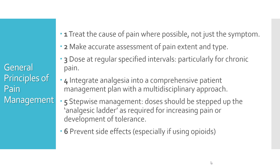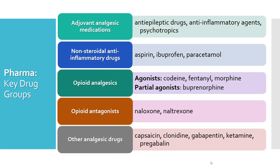Pain management involves pharmacological and non-pharmacological interventions. For the pharmacological part, key drug groups include opioid analgesics and non-steroidal anti-inflammatory drugs, which we will look at in more detail. Adjuvant analgesic medications can help when given with a main analgesic drug. Opioid antagonists are used when there is opioid overdose or toxicity, and there are other analgesic drugs which work by different mechanisms of action.